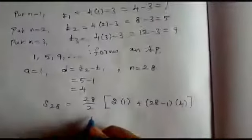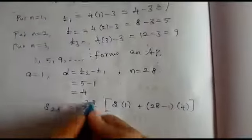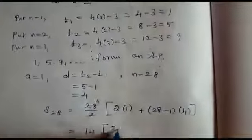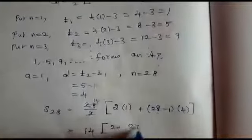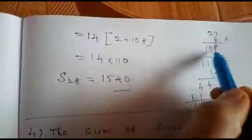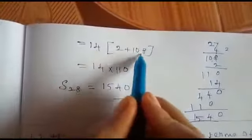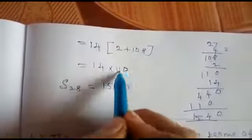Next, what is 28 by 2? 14. So 14 into 2 plus 28 minus 1 is 27 into 4. What is 27 into 4? 27 into 4 is 108. So 14 into 2 plus 108. What is 2 plus 108? 2 plus 108 is 110.